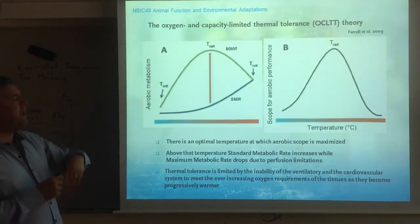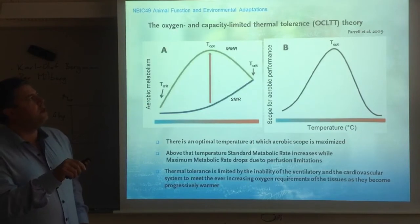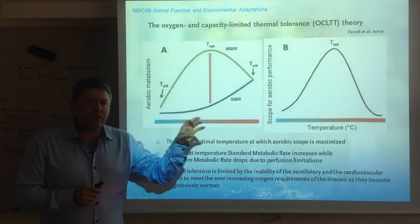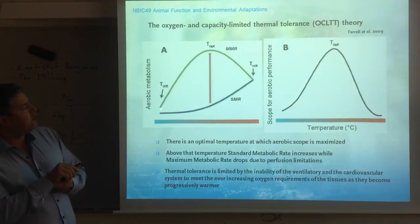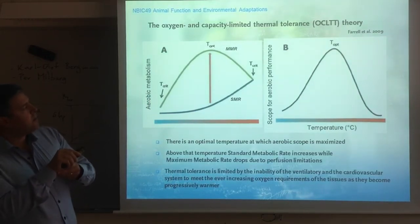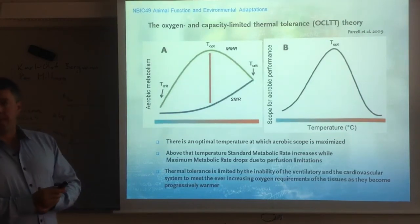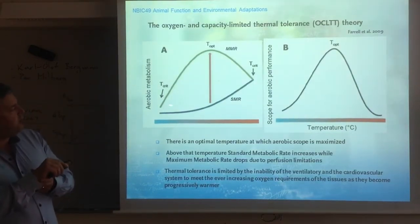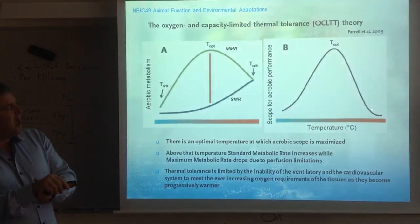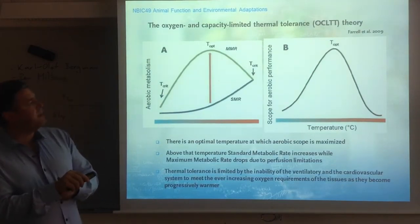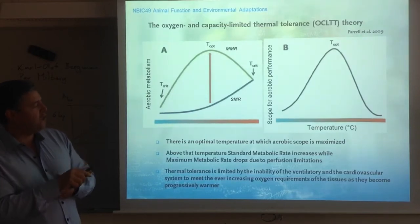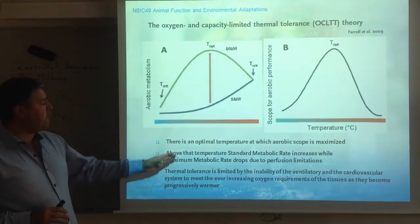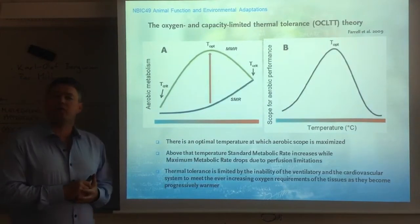This brings us back to the definition of what's called the Oxygen and Capacity Limited Thermal Tolerance Theory, or OCLTT, which is connected directly with the aerobic scope concept. Standard metabolic rate versus maximal metabolic rate — the difference between these two is aerobic scope. If you plot that difference across temperatures, you get the scope for aerobic performance, and within that scope there is an optimal temperature at which aerobic scope is maximized.